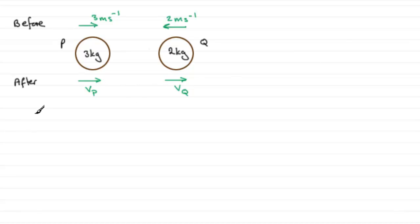Let's just write this down: since the difference in final speed equals 1 meter per second, that's telling me that VQ minus VP must equal 1. Therefore VQ minus VP must equal 1.